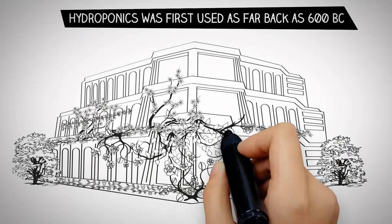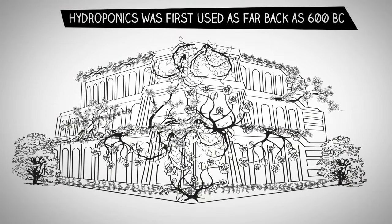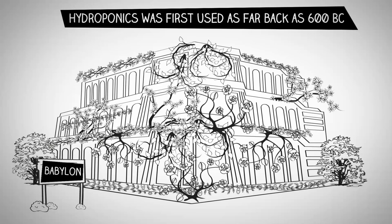Hydroponics was first used as far back as 600 BC in the Hanging Gardens of Babylon, one of the seventh wonders of the world.